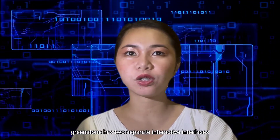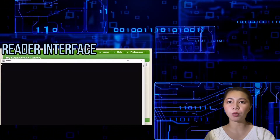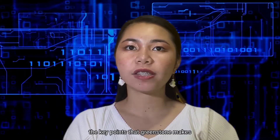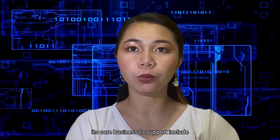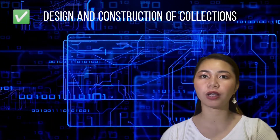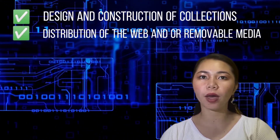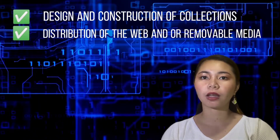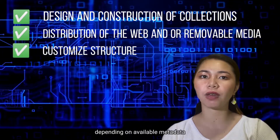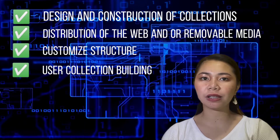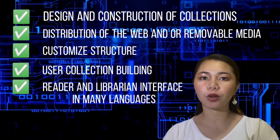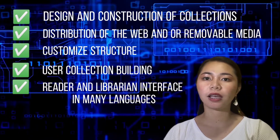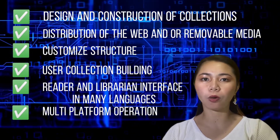Greenstone has two separate interactive interfaces: the reader interface and the librarian interface. The key points that Greenstone makes its core business to support include design and construction of collections, distribution on the web and/or removable media, customized structure depending on available metadata, user collection building interface for librarians, reader and librarian interface in many languages, and multi-platform operations.